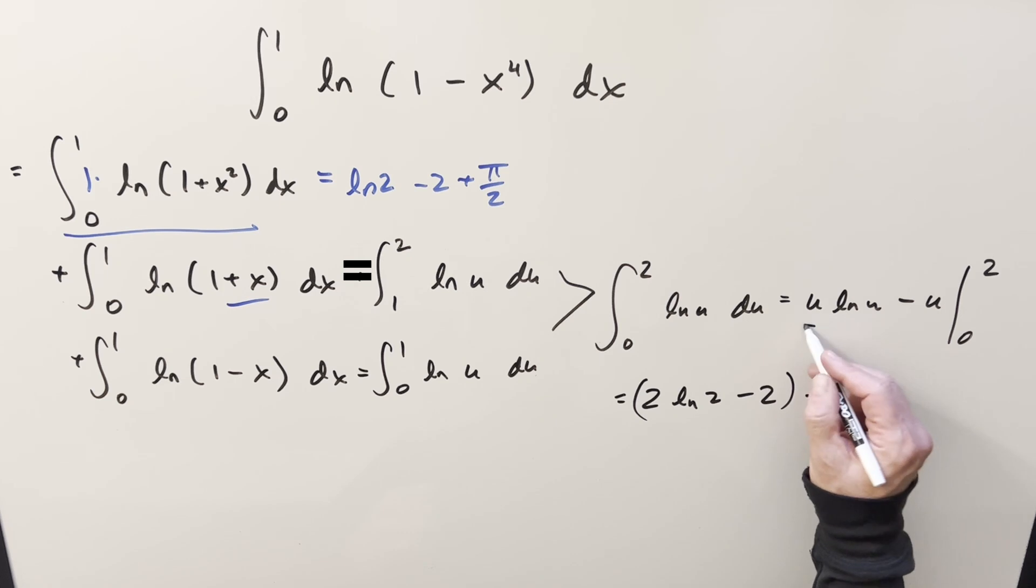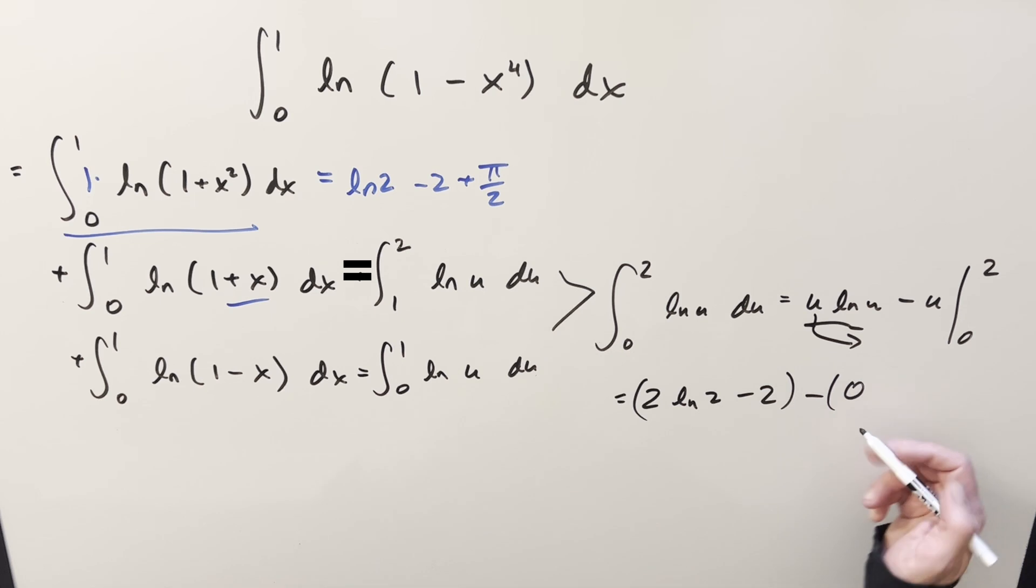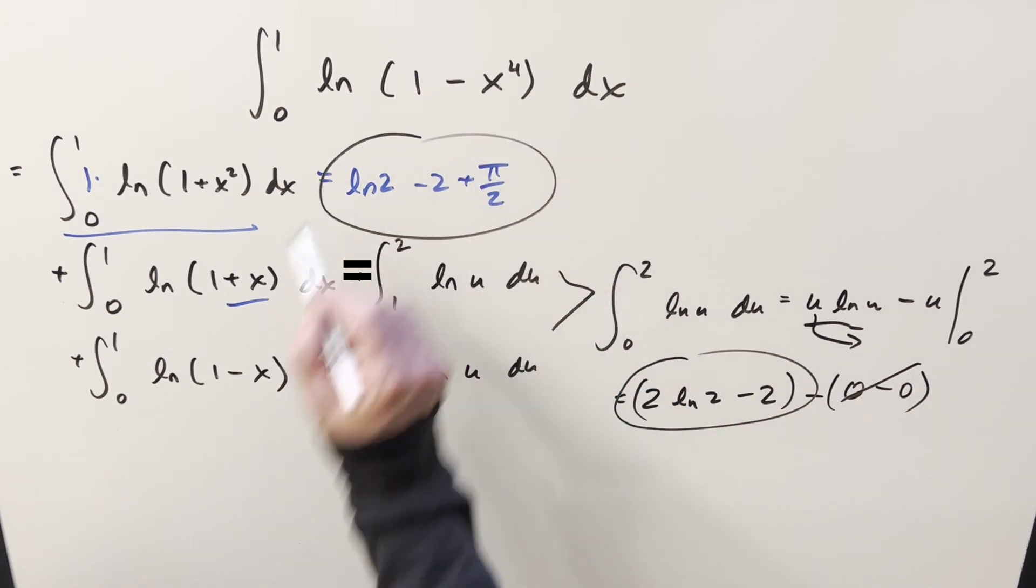When you plug zero in, so this one actually, this part's going to be an indeterminate form, but you could use L'Hopital's rule on this, just bringing the u into the denominator, and you'll get a zero. And then you plug zero in here, and of course you get zero. So this part goes away, and all we're going to need to do is just add this to this for our solution.